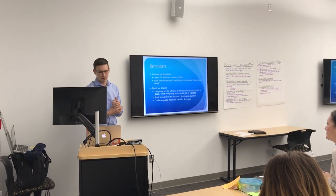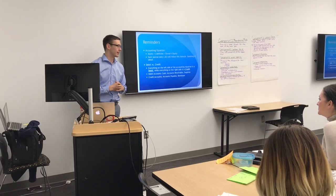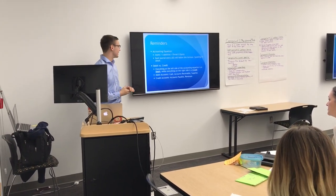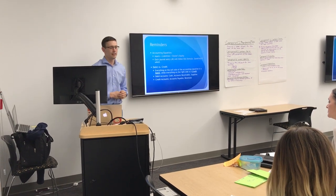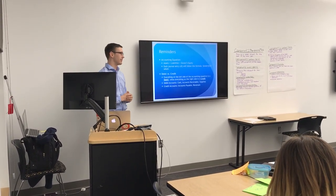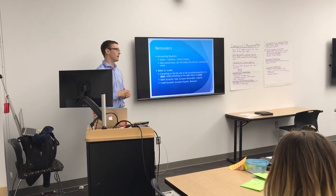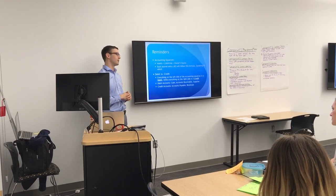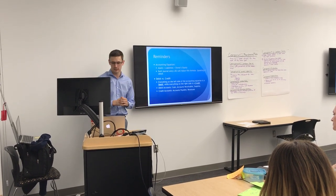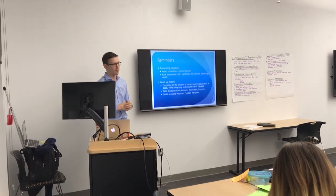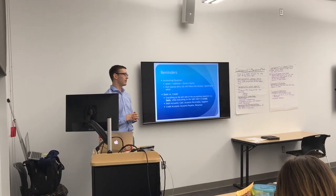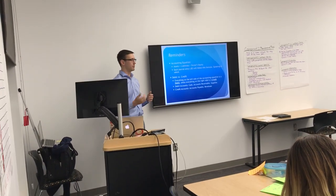So a couple of reminders — this is the review portion we'll go through. The foundation of everything in this class has been the accounting equation, which is: assets equals liabilities plus owner's equity. Like every equation, it has to balance. One equals one — one cannot equal two at any point. That's the same way the accounting equation works. Each journal entry you'll be working on in a T-chart account will balance using this formula.